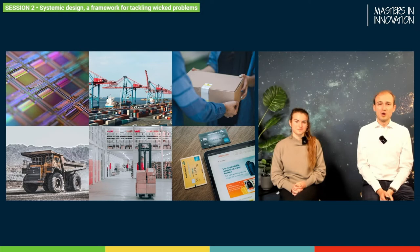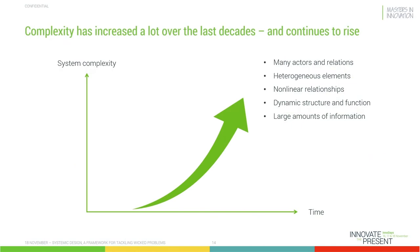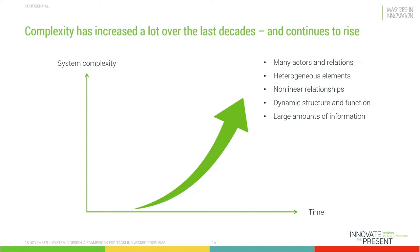So throughout these examples — the electric power grids, the urban areas, and the global supply chains — we see that the complexity in the systems around us has increased a lot over the last decades and continues to rise. It's notable particularly in the number of people and organizations involved in these systems, also in the diversity of actors, the non-linear types of relationships they have, and in general a much more dynamic structure with a lot more information flowing through these systems. All these evolutions make that we experience, as human beings but also as businesses and organizations, much more complexity.